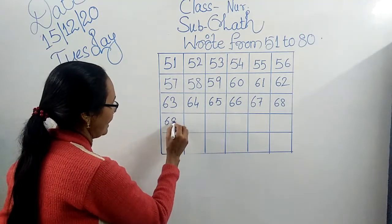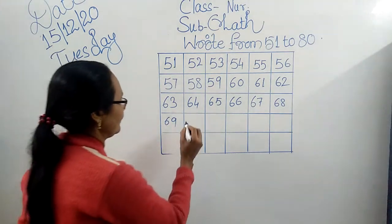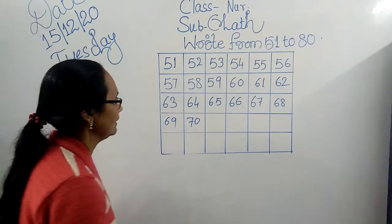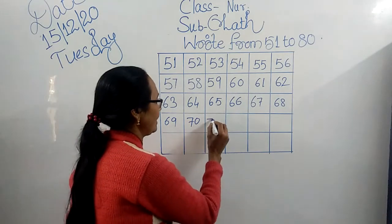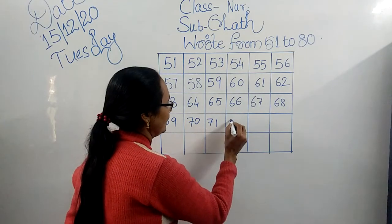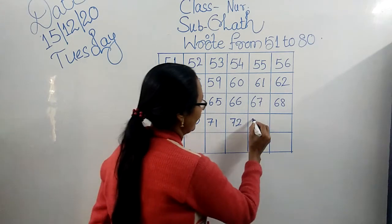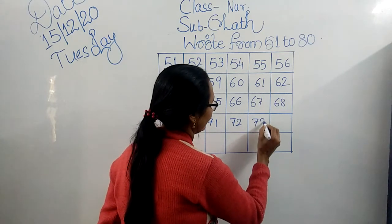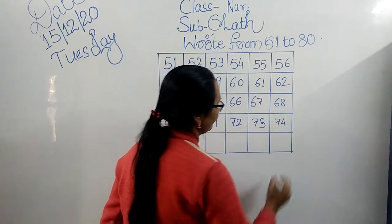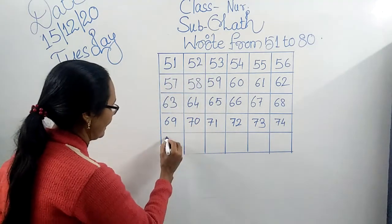6, 9 — 69. 7, 0 — 70. 7, 1 — 71. 7, 2 — 72. 7, 3 — 73. 7, 4 — 74.